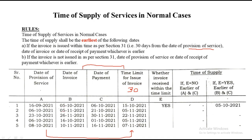Next: invoice is 26th November and time limit is 22nd November — the invoice has crossed the limit, so it is not within the time limit, so no. If it is not within the time limit, the rule is date of provision and date of payment, whichever is earlier. So 20th October and 30th November — October is earlier, so the answer is 23rd October. Next: invoice is on 16th October and time limit is 5th November — it is well ahead, so yes, it is within the limit. Rule: date of invoice and date of payment, whichever is earlier — 16th October and 1st October — so 1st October is the answer.